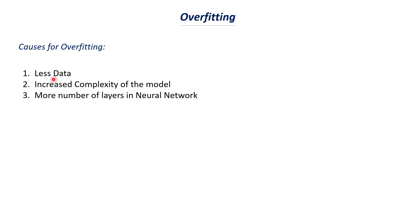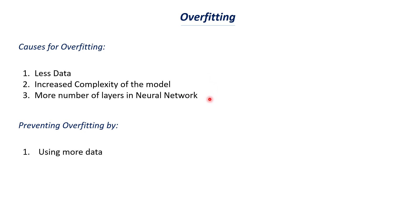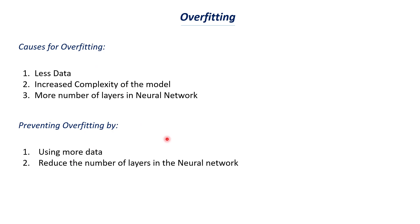To summarize the causes: one is having a smaller dataset; the second is having a very complex model; the third is having too many layers in a neural network. Now let's understand how we can prevent overfitting. The first prevention technique is using more data — a larger dataset allows the model to ignore outliers and understand the data better. More data leads to better model performance and reduces the chance of overfitting.